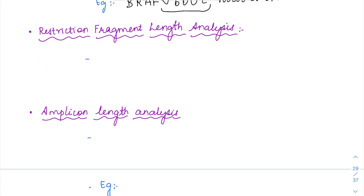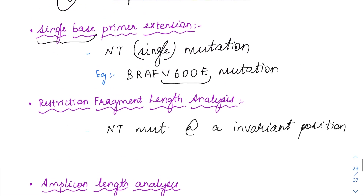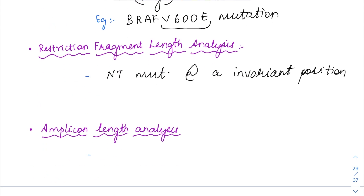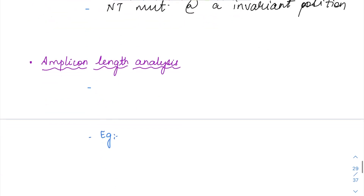Then restriction fragment length analysis. Here it is the exact opposite of single base primer extension. Here the nucleotide mutation is going to happen at an invariant nucleotide position. In single base primer extension the exact position was known — it was happening at a single nucleotide. But here you are having nucleotide positions which are going to vary with the disease. So nucleotide invariant position mutations you can identify with restriction fragment length analysis.